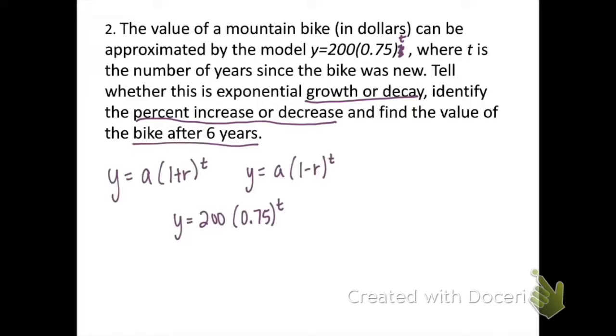Let's start by deciding whether this is a growth function or a decay function. So I've written my two equations, growth function has a plus sign, decay function has a minus sign. I can see pretty easily that my a value is 200, but normally I would have like one plus or minus our rate in the parentheses and it's been condensed. So you have to ask yourself, do I get 0.75 by doing one plus something or one minus something? And the answer is you get it by doing one minus a number, so this is going to be a decay function.